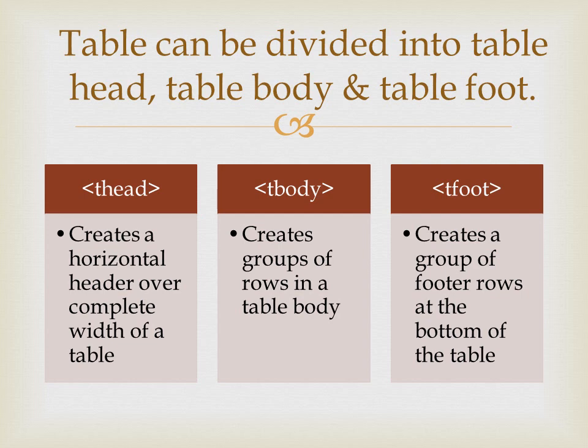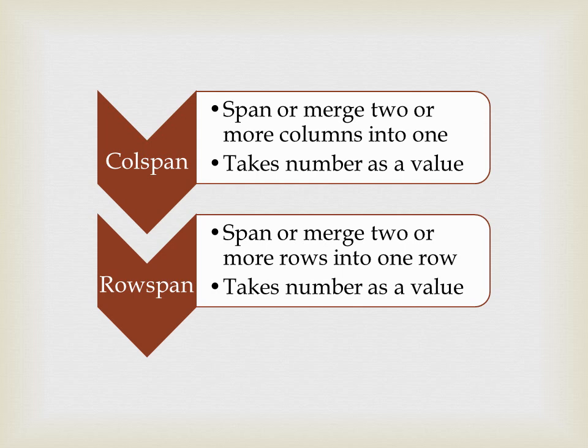Head stands for header, body, and foot stands for footer. Now colspan and rowspan: colspan can merge or span two or more columns into one column. Rowspan will span or merge two or more rows into one. Col is for columns and row is for rows. Colspan and rowspan take a number as a value — you can't add them by percentage.